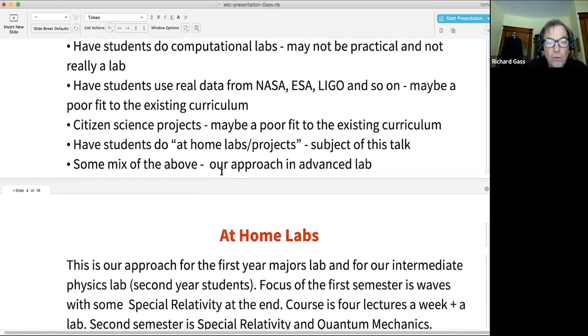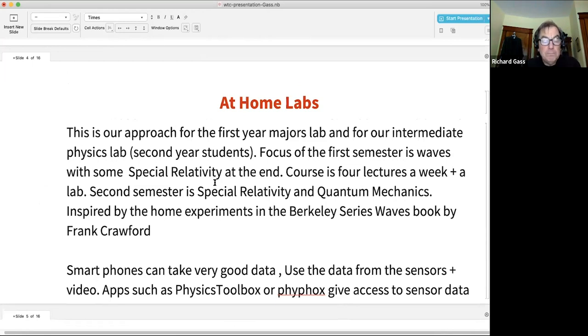But I teach a course called intermediate physics. I also have responsibility for our first year majors lab. These are relatively small courses with 30 to 40 students. The intermediate physics lab is required of all our second year majors. It's a five-credit course with four lectures a week plus a lab that is attached to the course. The focus of the first semester is waves and vibrations with a little special relativity thrown in at the end. The second semester, we do special relativity and quantum mechanics.